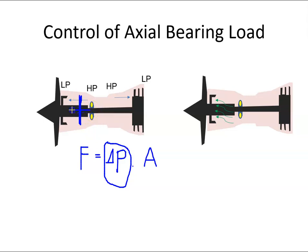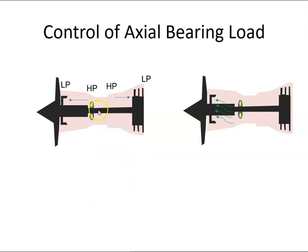So we have a force pushing the shaft in this direction. Similarly, on the hot section of the engine, we have high pressure here and low pressure here, so we have a pressure differential acting on the turbine discs area, and that's pushing the shaft in that direction. Now if the two forces are equal then things are okay, but if they're not equal the shaft will want to move along this axis and that can damage the bearings.